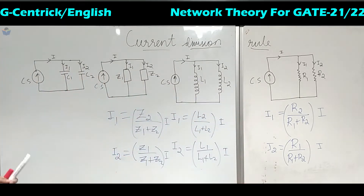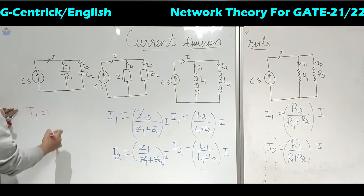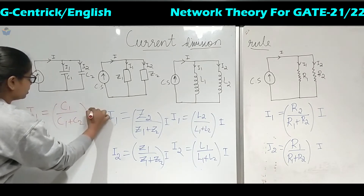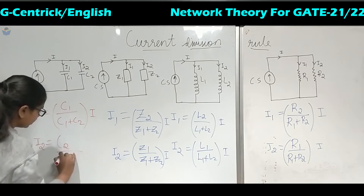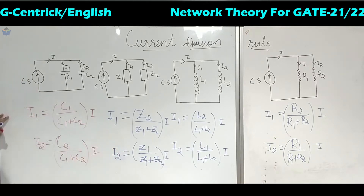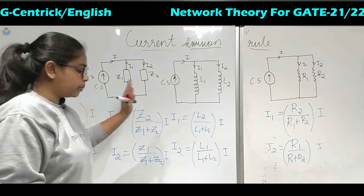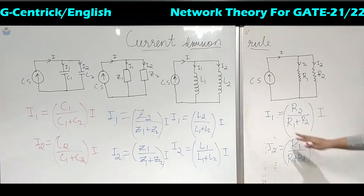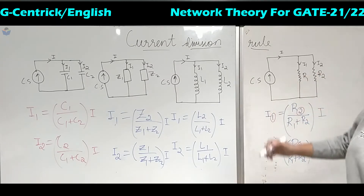Coming to the capacitor — it runs opposite to all of these three. What you have to do is: if you have to calculate current I1 in this branch, take the same capacitor C1; do not take the opposite one. So I1 uses C1, and the rest remains the same — summation of two capacitors, multiplied with the total current. If you have to calculate I2: use C2, then C1 plus C2, multiplied with total current I. For capacitors you take the value from the same branch, whereas for impedance, inductors, and resistors you take the value from the second branch in which you do not have to calculate the current.